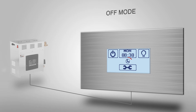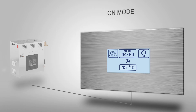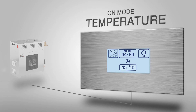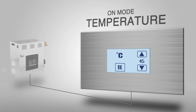Otherwise, put the control unit in on mode by pressing the on icon. An animated steam icon indicates that the session time has now started. Click the temperature bar to modify the room temperature and change the values from the arrow icons.